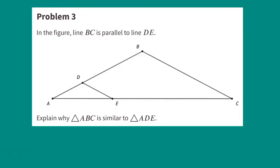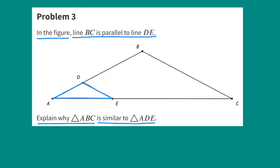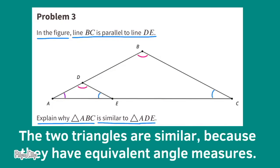Problem number three. In the figure, line BC is parallel to line DE. Explain why triangle ABC is similar to triangle ADE. The two triangles are similar because they have equivalent angle measures.